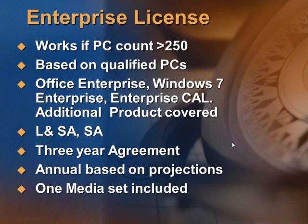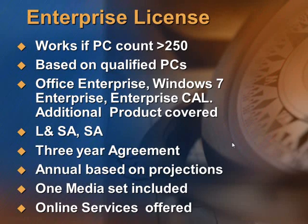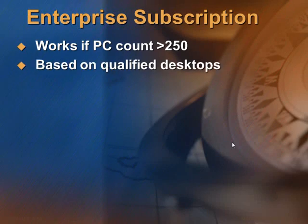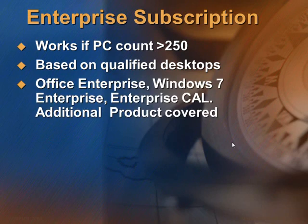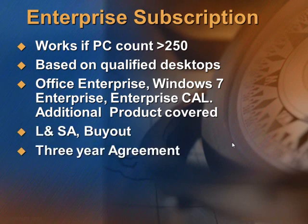It's a 3-year agreement, global in scope, covering all affiliates of the company across the world. Once a year, Microsoft requires you to take inventory of your PCs, and if there are any additions, you pay on a pro-rata basis. Subscription is more or less similar to the Enterprise Agreement, except that in Subscription you pay subscription charges, and there is a buyout option available at the end of the agreement.